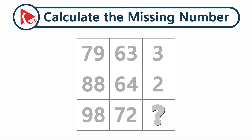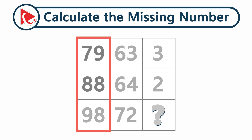You are presented with a 3x3 matrix. The matrix has numbers inside. The first column of the matrix has numbers 79, 88, and 98.